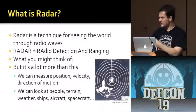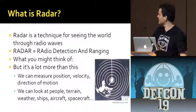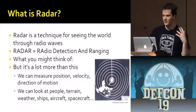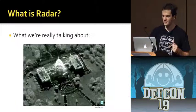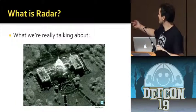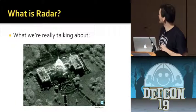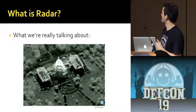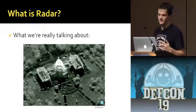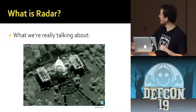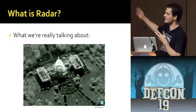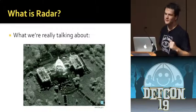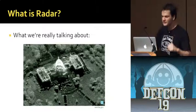What we can do today is more something like this — this is an image of the Capitol. This is a Sandia radar system, and this is what synthetic aperture radar can really do with a nice system. We have a 3D point cloud of the Capitol building taken from an aircraft.